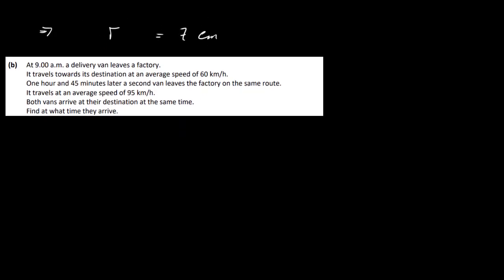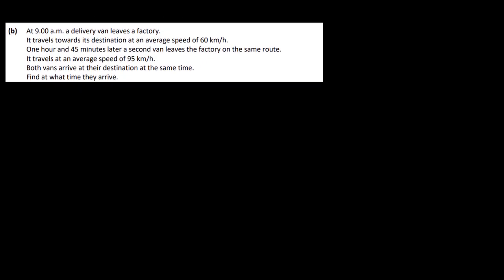Okay, that's part A finished, let's have a look at part B. At 9 a.m., a delivery van leaves a factory, it travels towards its destination at an average speed of 60 kilometers an hour. So let's just have a look at this, we'll have a look at van A, and I presume there's a van B as well. Look at that in a second, so this is 60 kilometers per hour. One hour and 45 minutes later, a second van leaves the factory on the same route. It travels at an average speed of 95 kilometers per hour. Both vans arrive at their destination at the same time, find what time they arrive at.